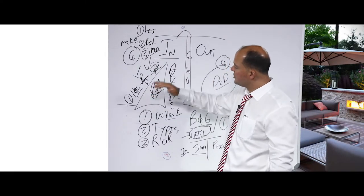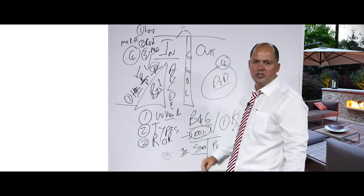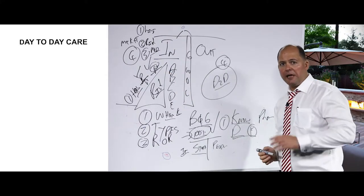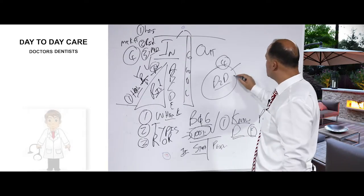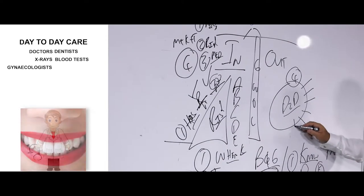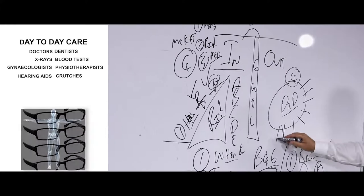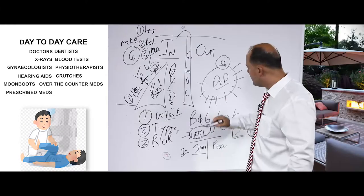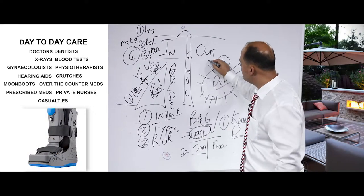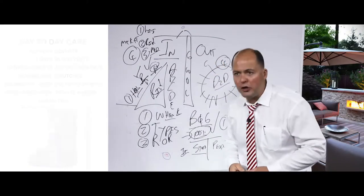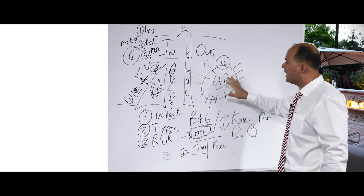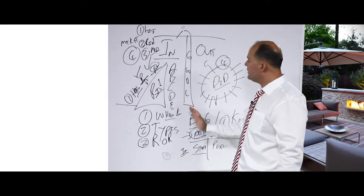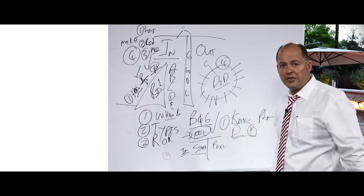So risk cover: hospitalization, rescue service, chronic condition cover. Component four is better known as day-to-day care — things such as doctors, dentists, x-rays, blood tests, gynae, physiotherapists, hearing aids, crutches, moon boots, over-the-counter medication, prescribed medication, private nurses, and casualties. It has nothing to do with the risk portion side — the Great Wall of China keeps the two sections apart.